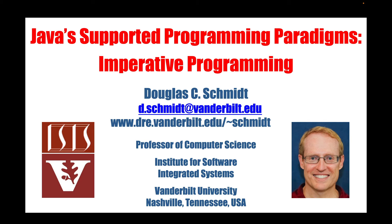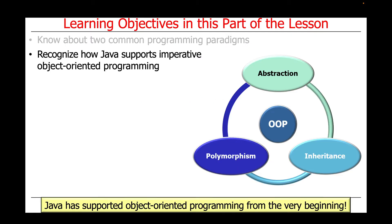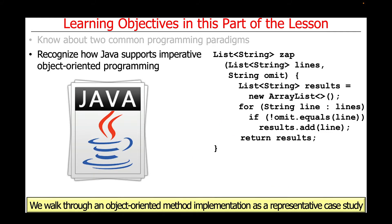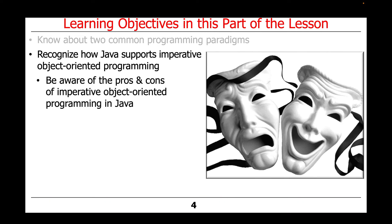Now that we've given an overview of Java-supported programming paradigms, let's focus on the imperative programming paradigm. In this part of the lesson, we'll describe how Java supports imperative object-oriented programming, which it supported right from the very beginning in the mid-90s and beyond. We'll walk through an object-oriented method implementation as a representative case study, and also talk about the pros and cons of using imperative object-oriented programming in Java.